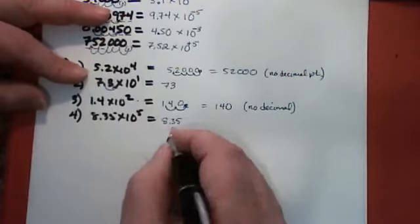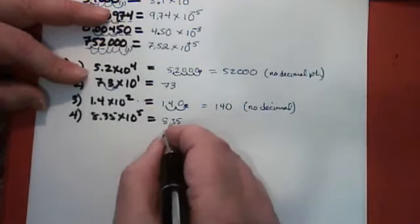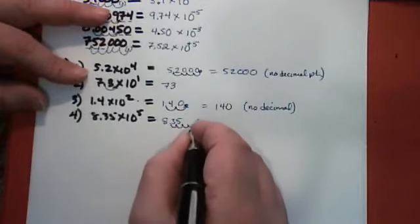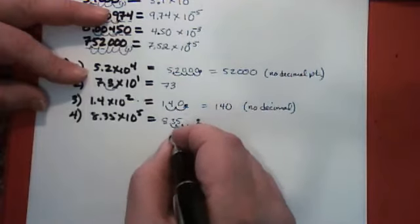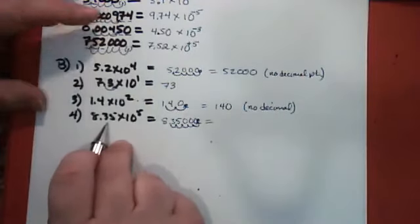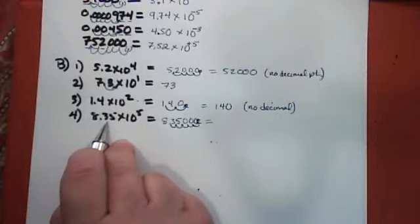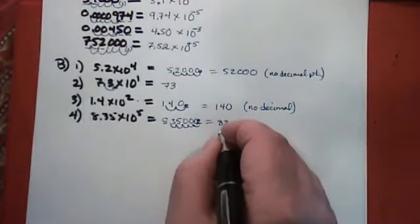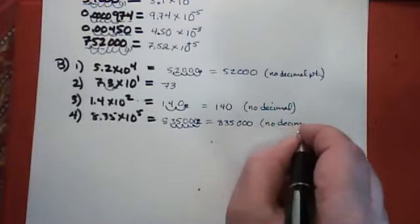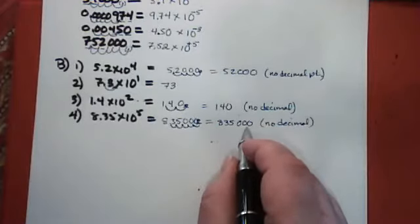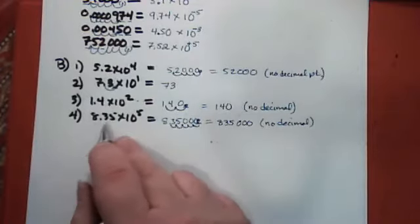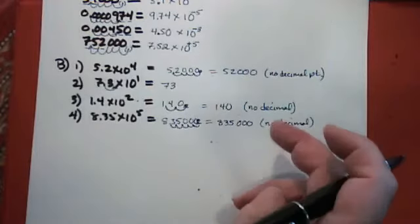For 8.35×10⁵, you move the decimal point five places in the direction that makes the number bigger. The decimal point ends up there and we have some empty spaces to fill in with zeros. To maintain the proper number of significant figures, you don't write the decimal point in the final answer. So it's 835,000 with no decimal. 835,000 with no decimal point has three significant figures — the zeros at the end don't count if there's no decimal — and the original number also had three significant figures.